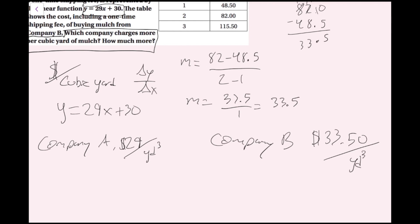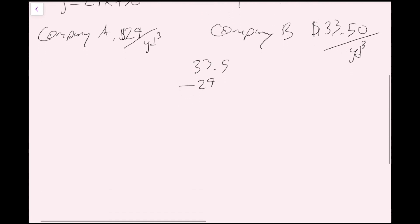The second part asks how much more. I just subtract: 33.5 minus 29 equals 4.50. So company B charges $4.50 more per cubic yard of mulch than company A. We've answered all the questions and now we're done with this one.